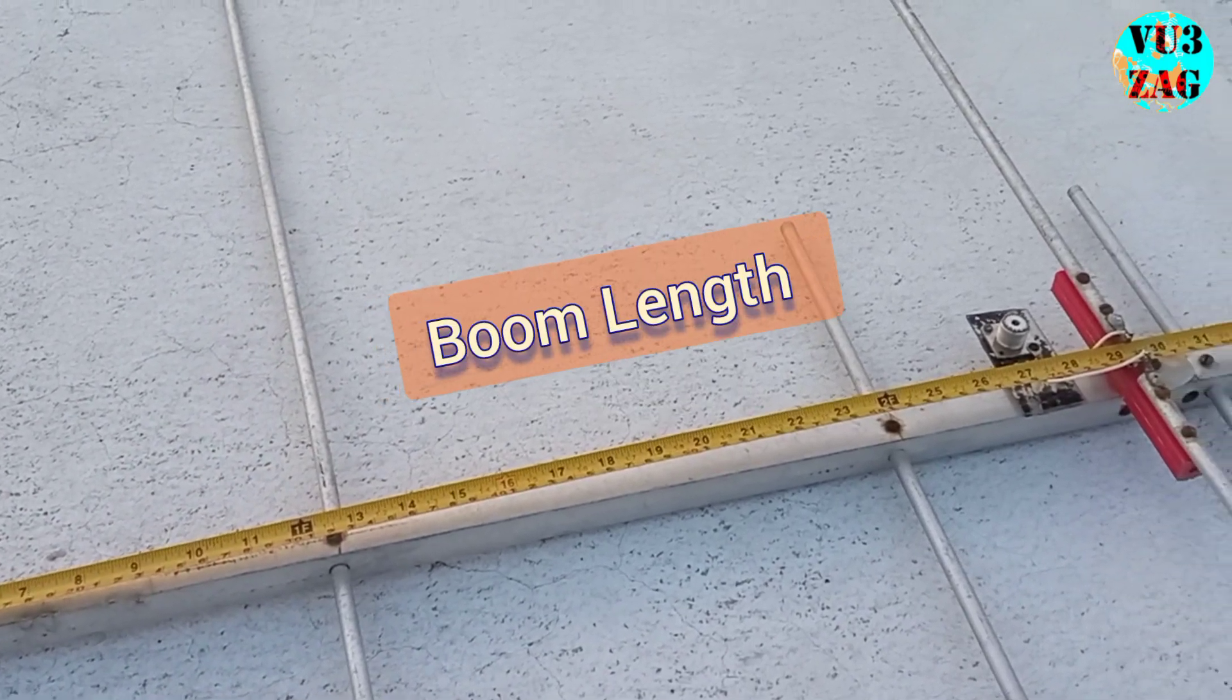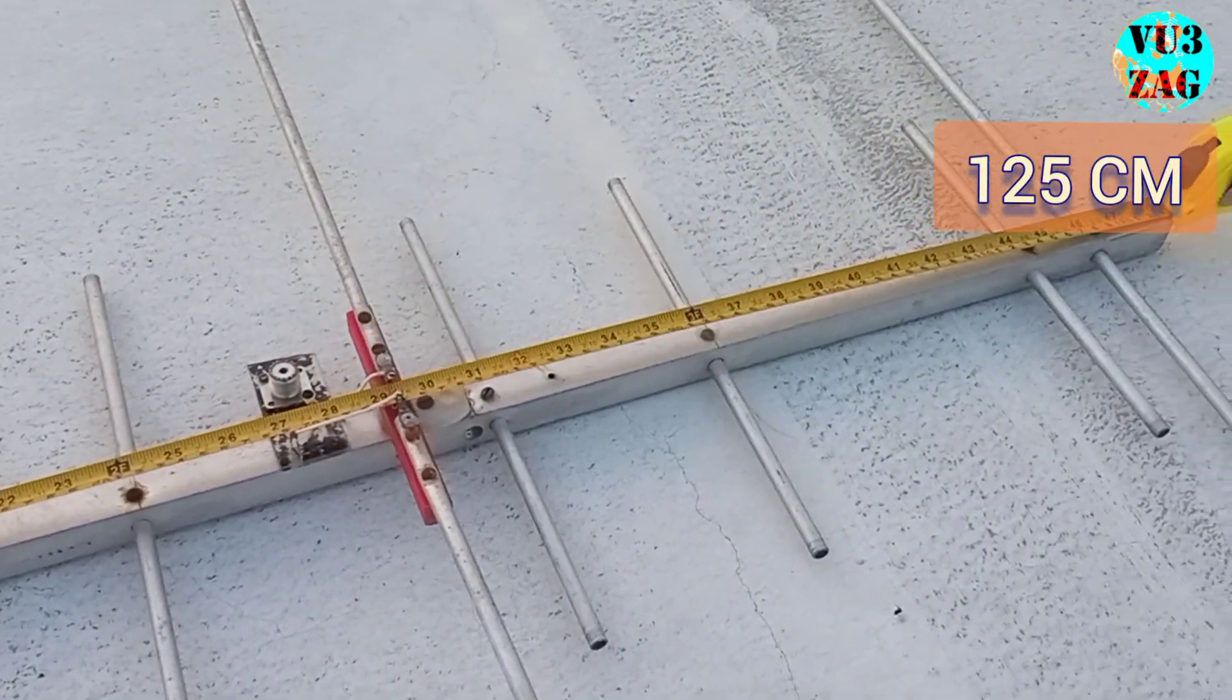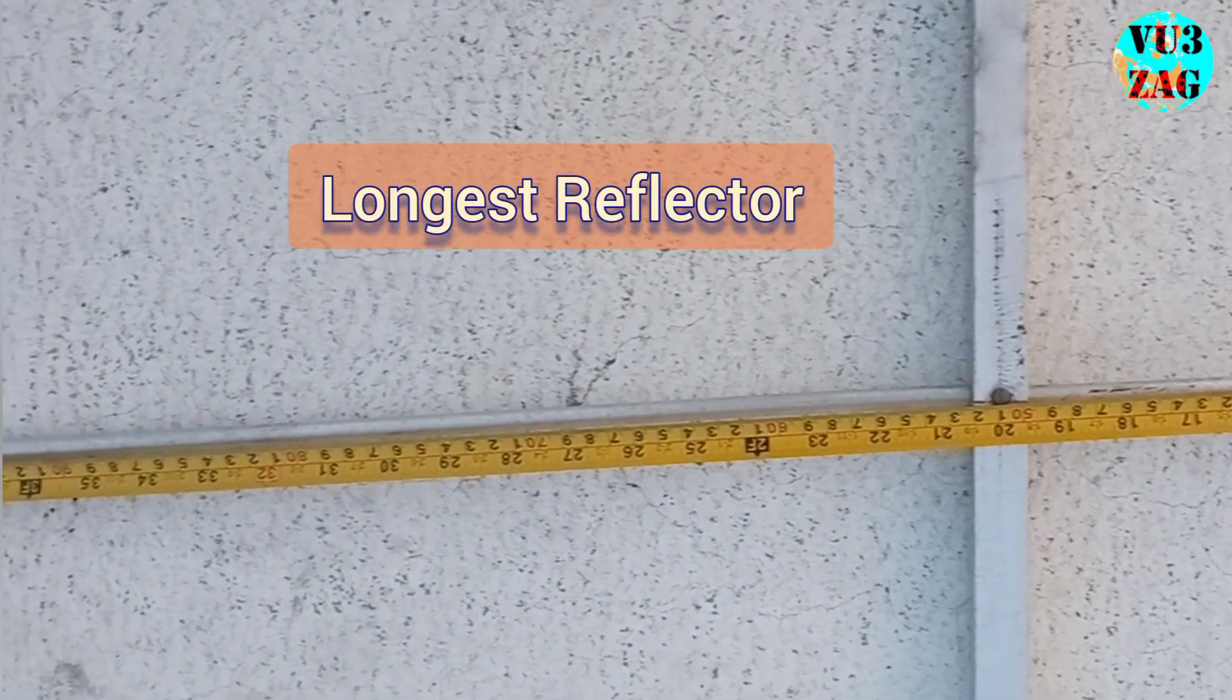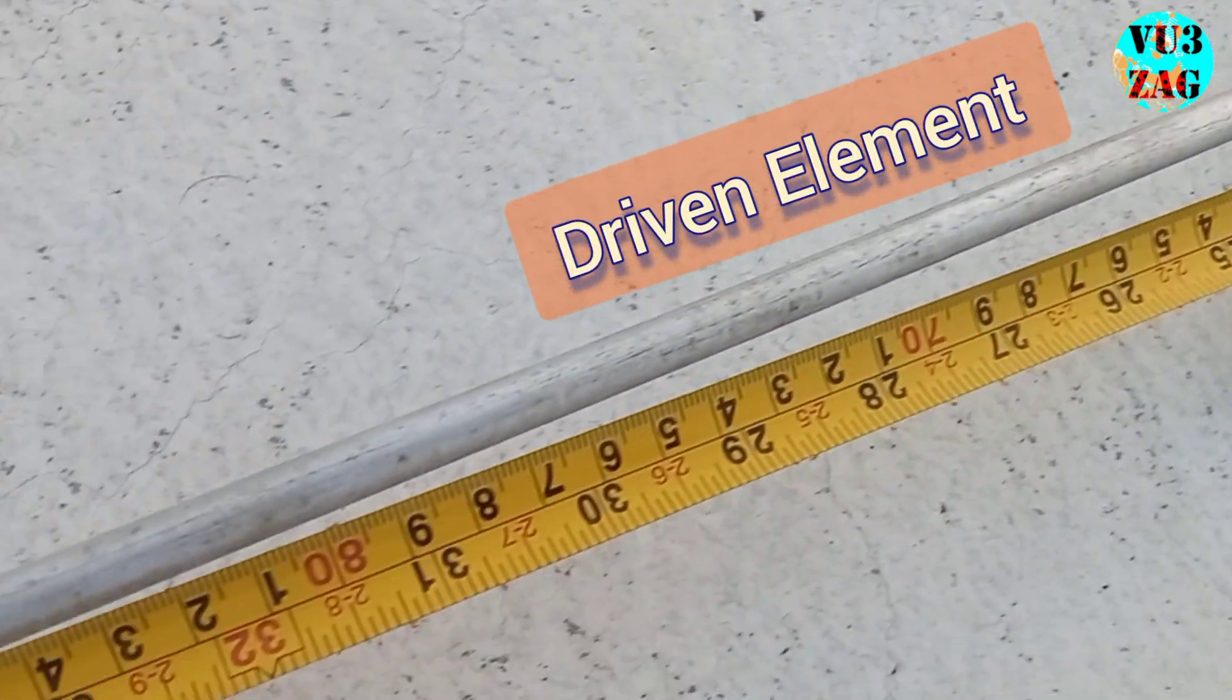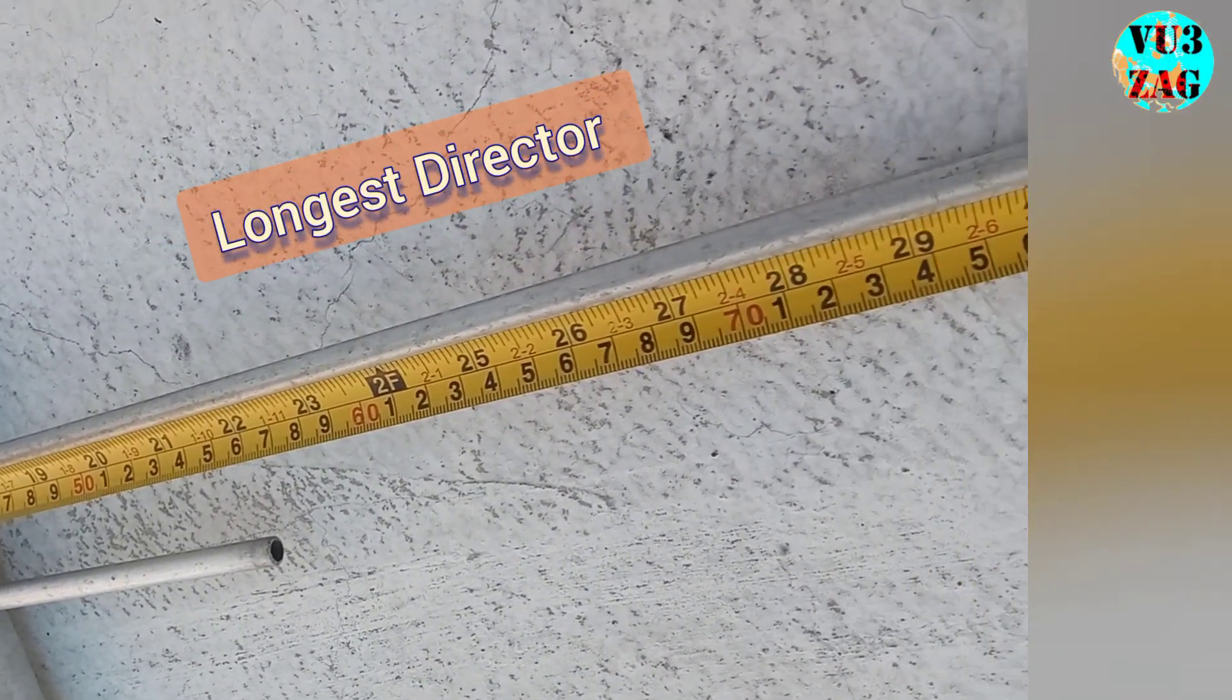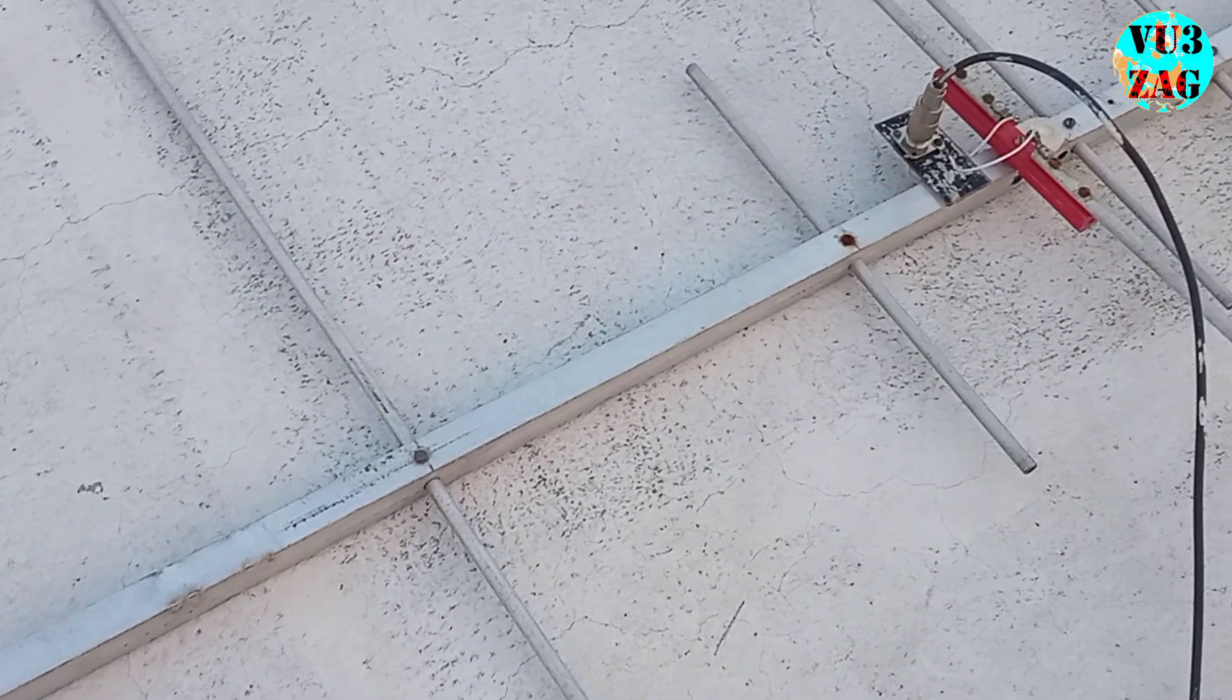These are the live measurements of the completed antenna. The boom measures around 125 cm. The length of the longest reflector is 102 cm. The driven element measures around 92 cm, and the longest director has a length of 82 cm.